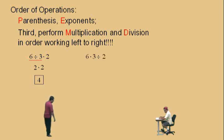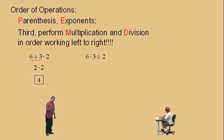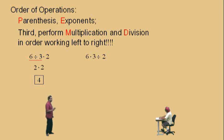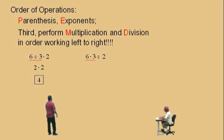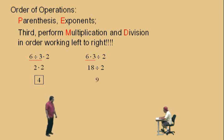Let's do another one. 6 times 3 divided by 2. Remember, order of operations does not say do multiplication before division. It says do multiplication and division at the same time, whichever comes first working left to right. In this problem, multiplication comes first, so we do 6 times 3, which is 18, divided by 2. What's 18 divided by 2, Charlie? 9. And that is our answer.